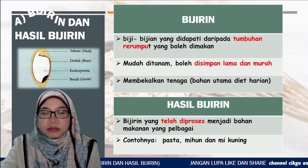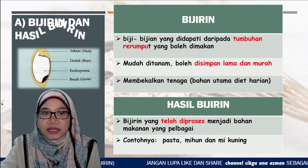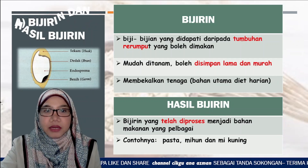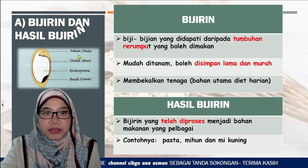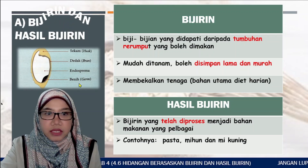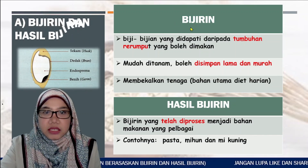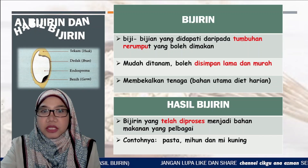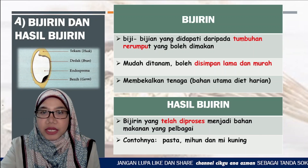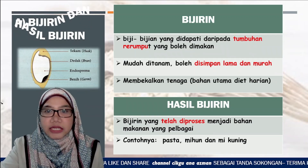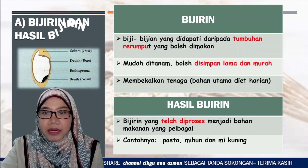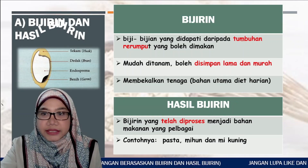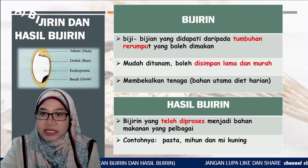Marilah kita mengenali apakah itu bijirin dan hasil bijirin. Dalam gambar ini, bijirin terdiri daripada sekam, dedak, endoplasma dan benih. Bijirin ialah biji-bijian yang didapati daripada tumbuhan rumput yang boleh dimakan. Bijirin juga mudah ditanam, boleh disimpan lama dan murah. Bijirin juga membekalkan tenaga dan merupakan bahan utama diet harian kita.